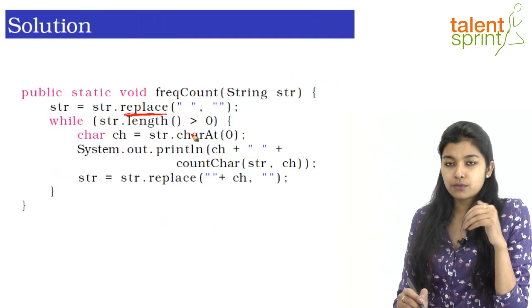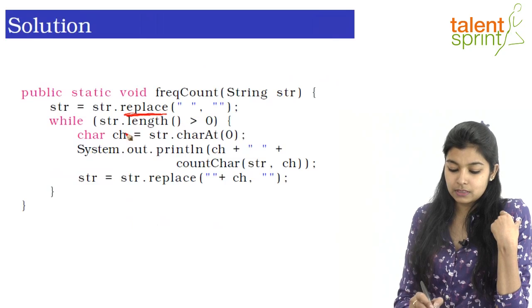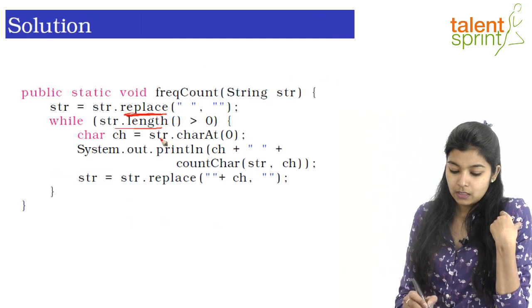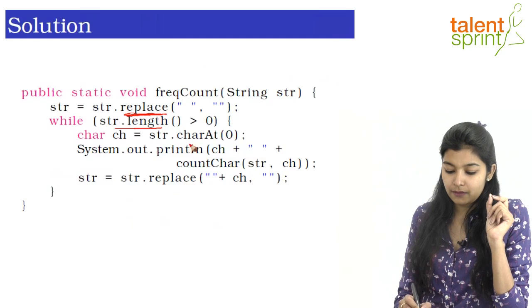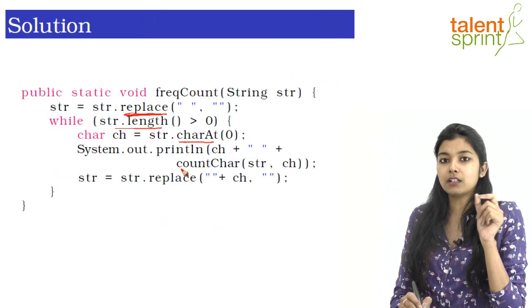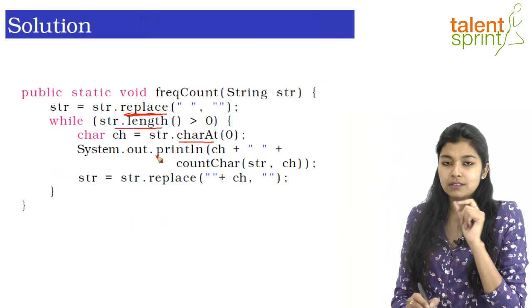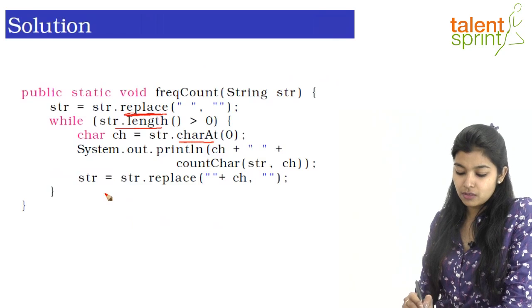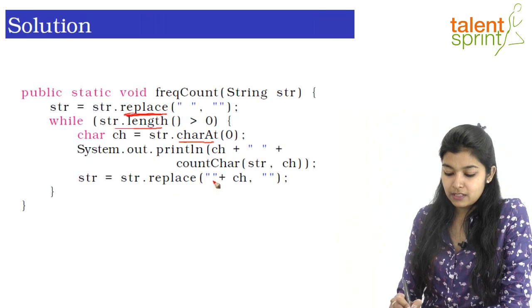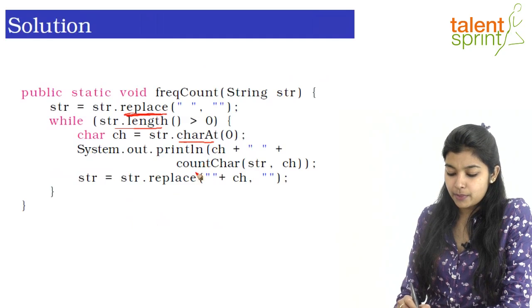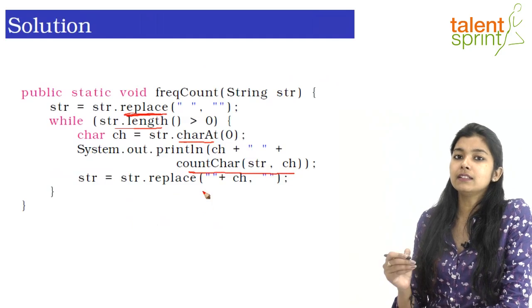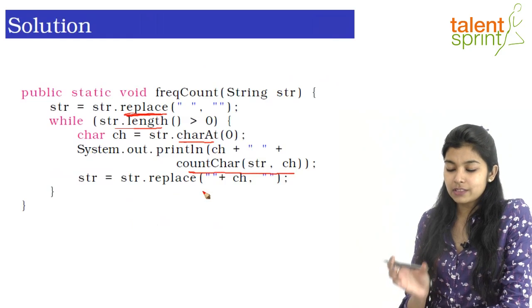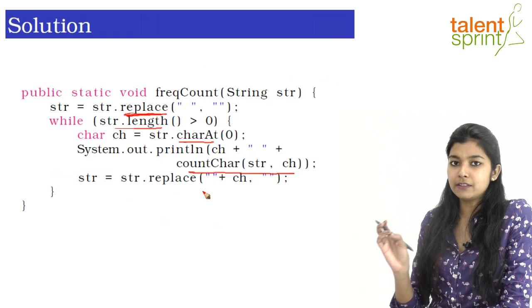We are traversing through our string using a while loop — so while the string length is greater than zero. To determine each character we have used the function charAt, so str.charAt(0) will give you the character at position zero. Storing it in ch, we then print ch and to print the frequency we are calling a separate function countChar, passing the string and the character. This will return the frequency which will be printed in front of the character.